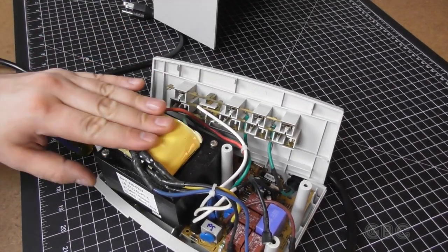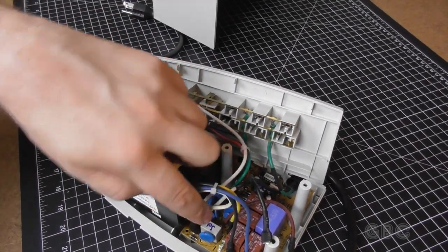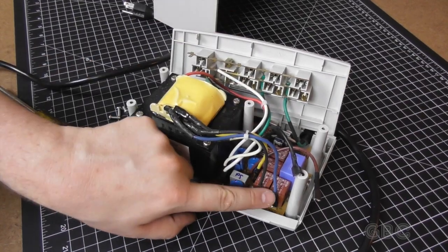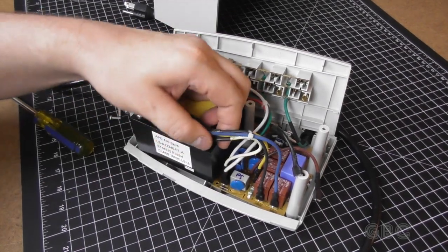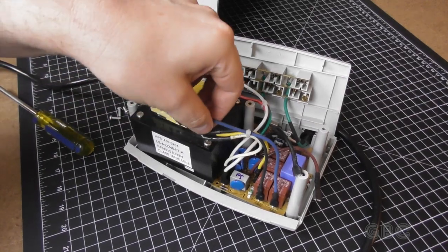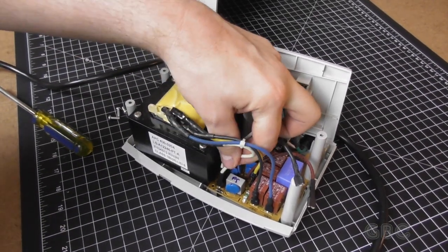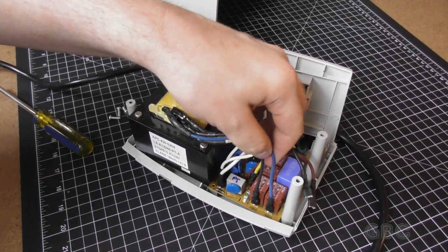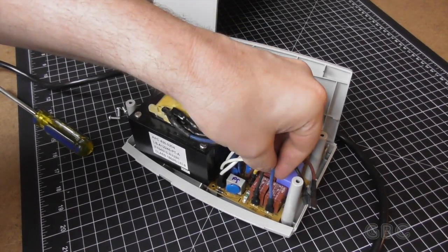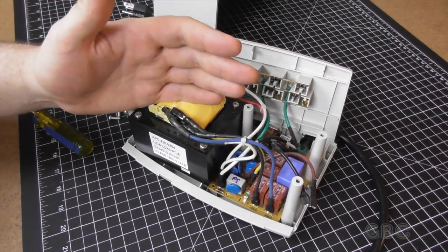As you can see here, we have the transformer. And you can see the various taps going down to the circuit board. And a bunch of relays to switch the various taps. We can see all the neutral wires, or the white wires, going to one location.